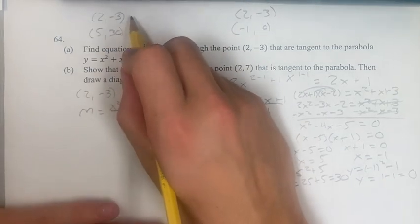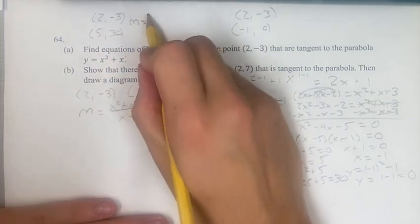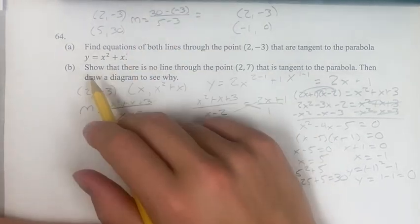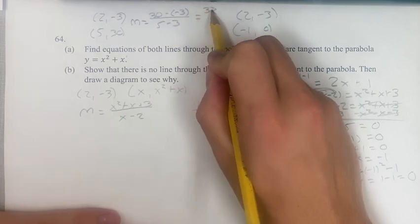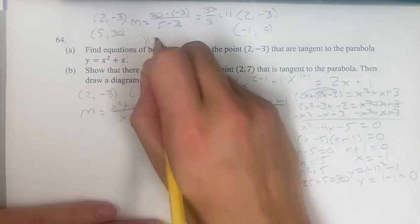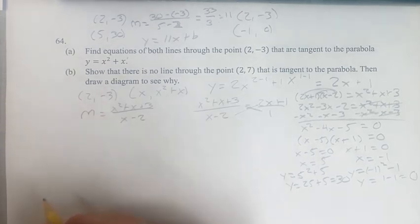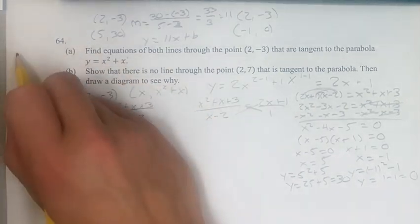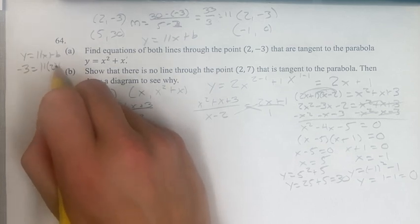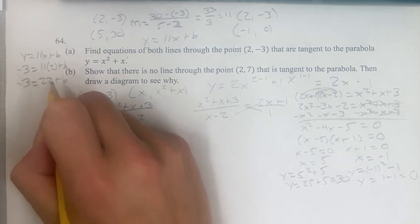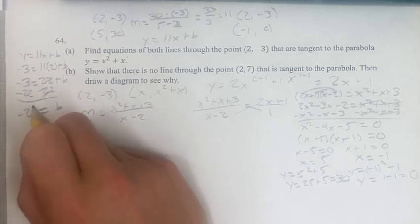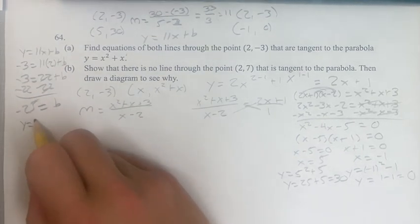For the first line through (2, -3) and (5, 30), the slope is 30 minus negative 3 over 5 minus 2, which is 33 over 3 equals 11. So y equals 11x plus b. Plugging in the point (2, -3): negative 3 equals 22 plus b, so b equals negative 25. The equation of this line is y equals 11x minus 25.